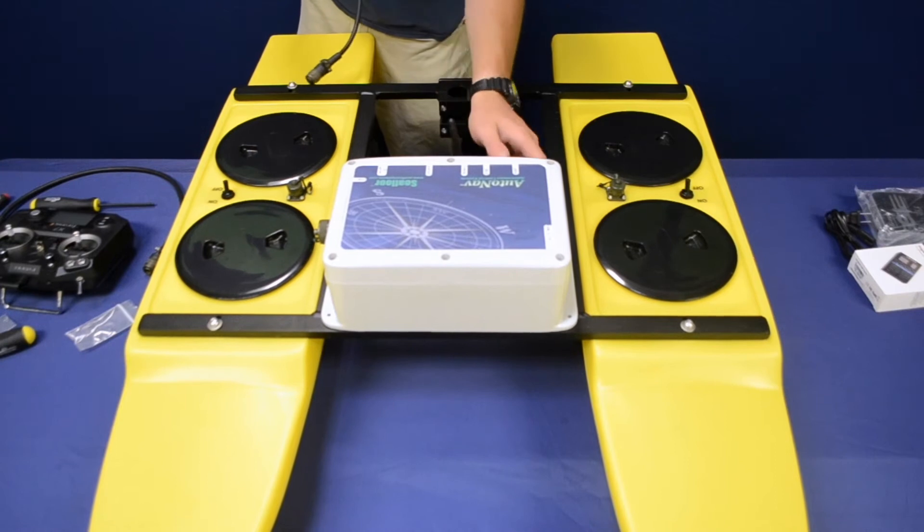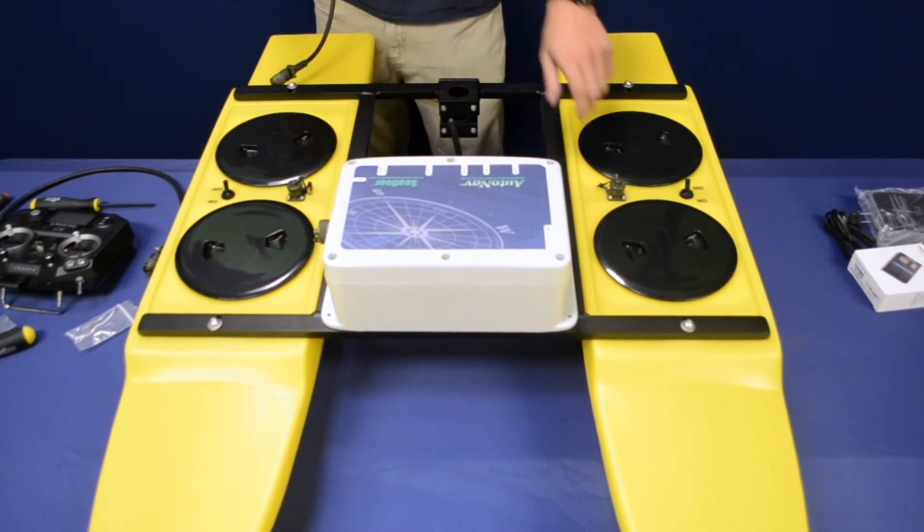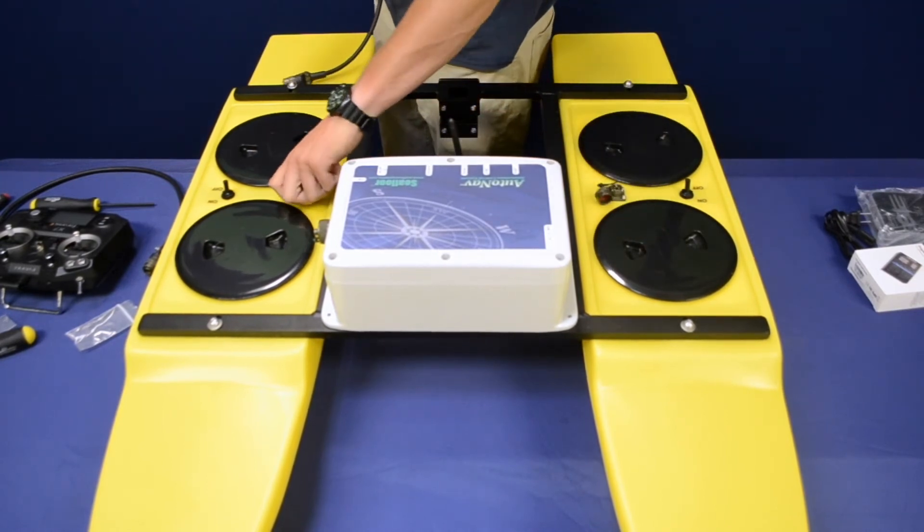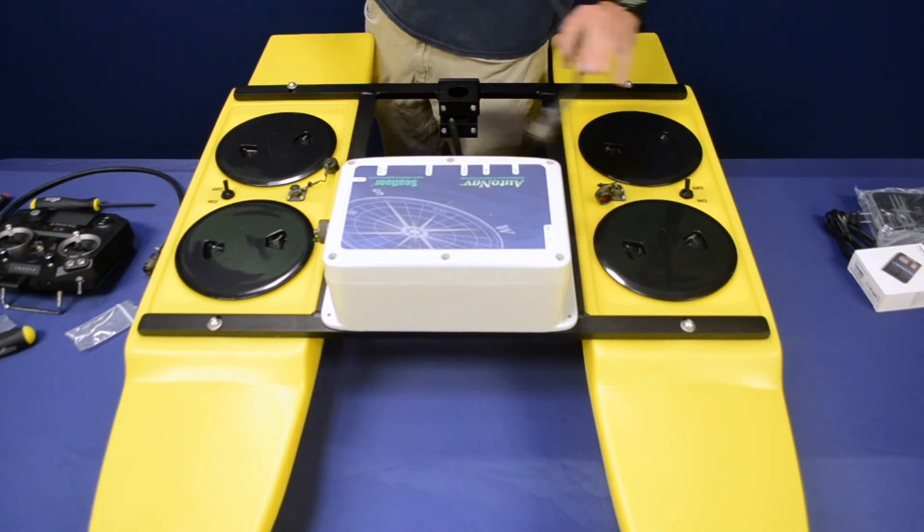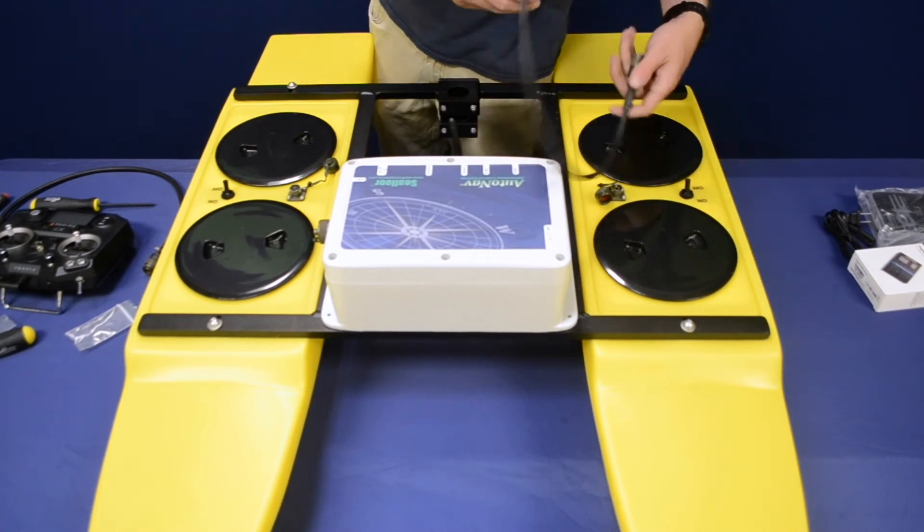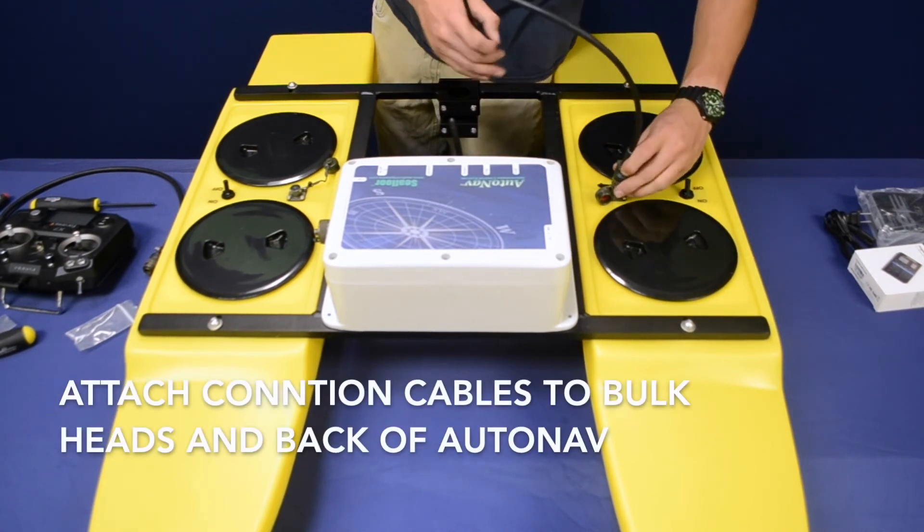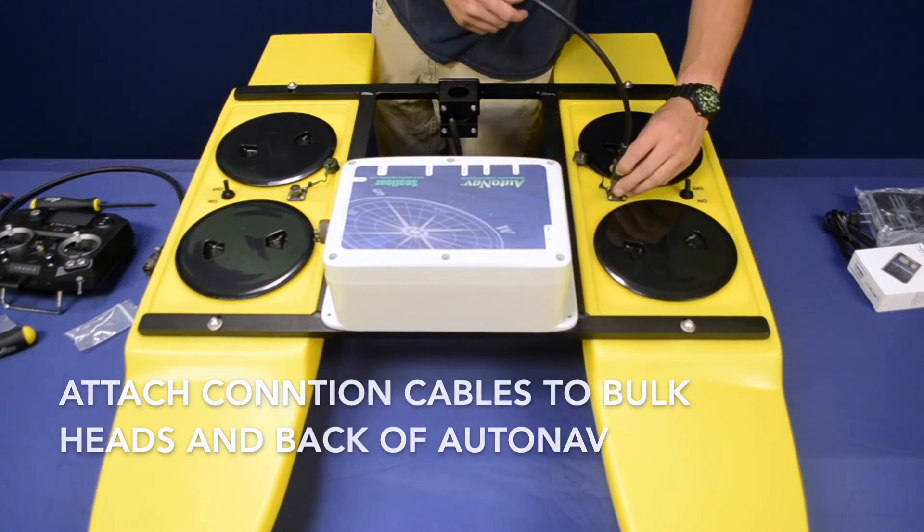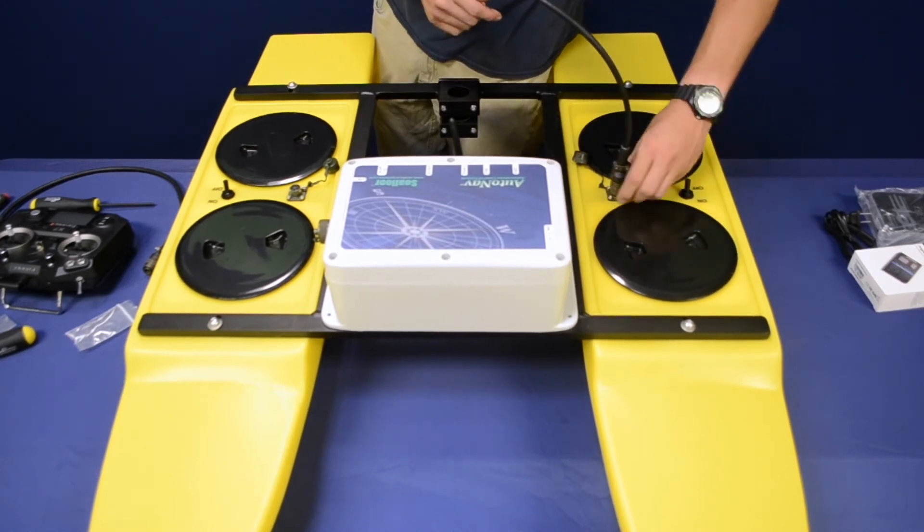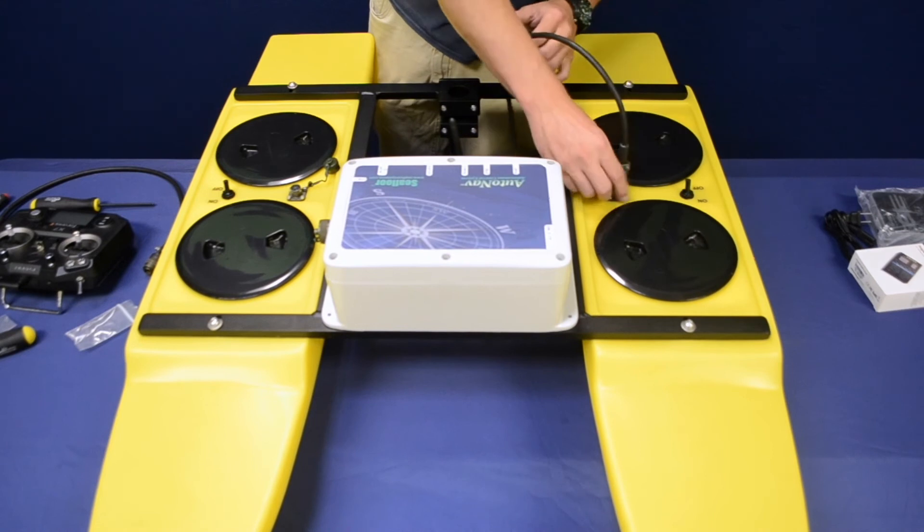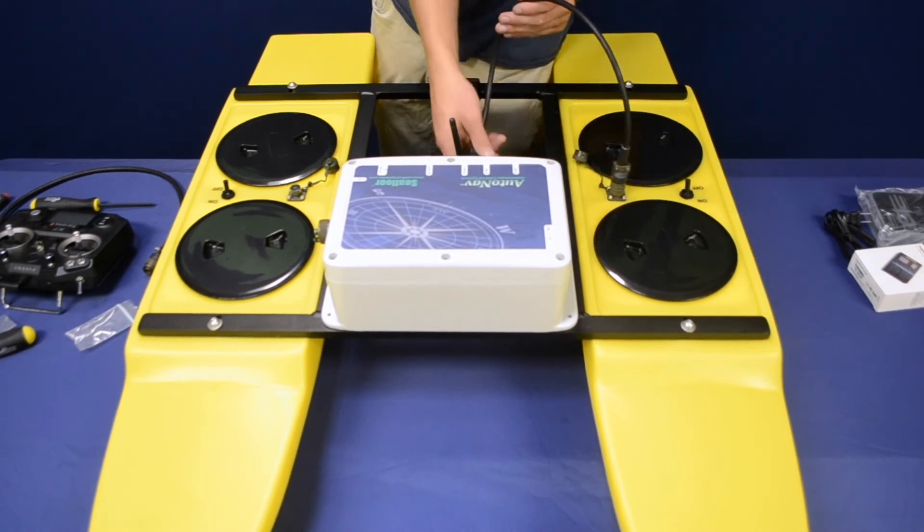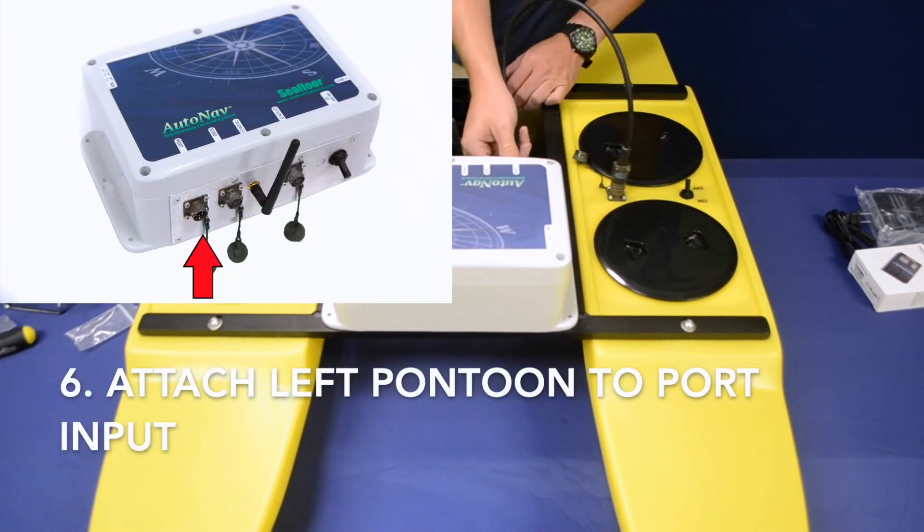Once the box is installed, you'll use the auto nav cables to connect the box to the pontoons. This is required for operation. That is how the auto nav sends its signal over to the pontoons. Each connector is keyed. There is a wide notch on the top along with four other smaller notches down below. These will line up into their assigned slots.